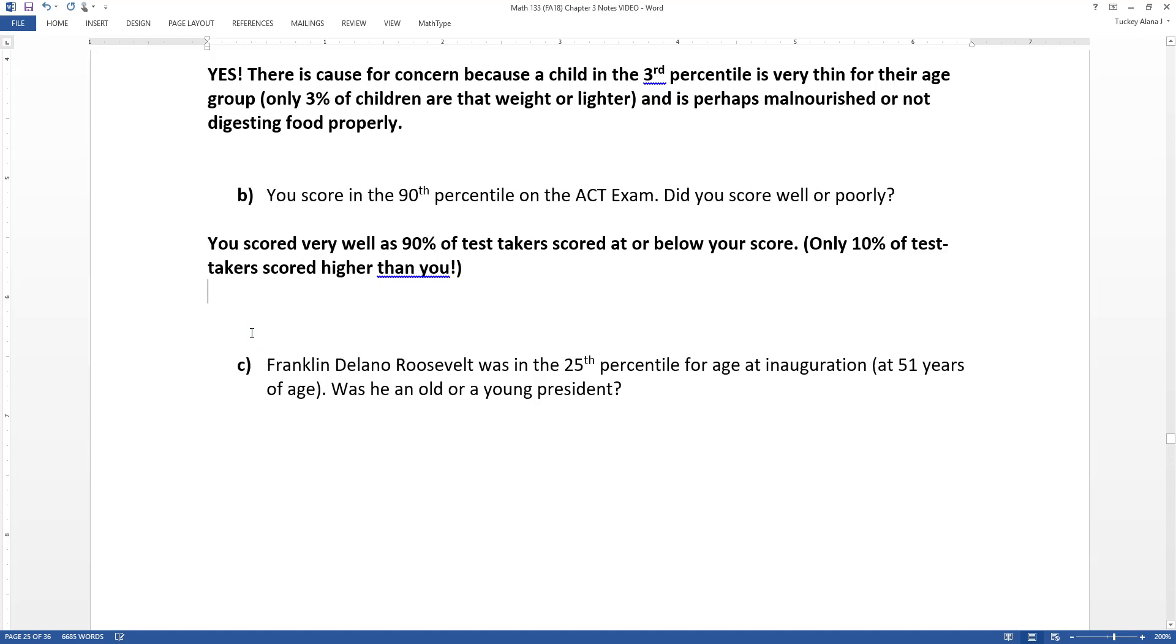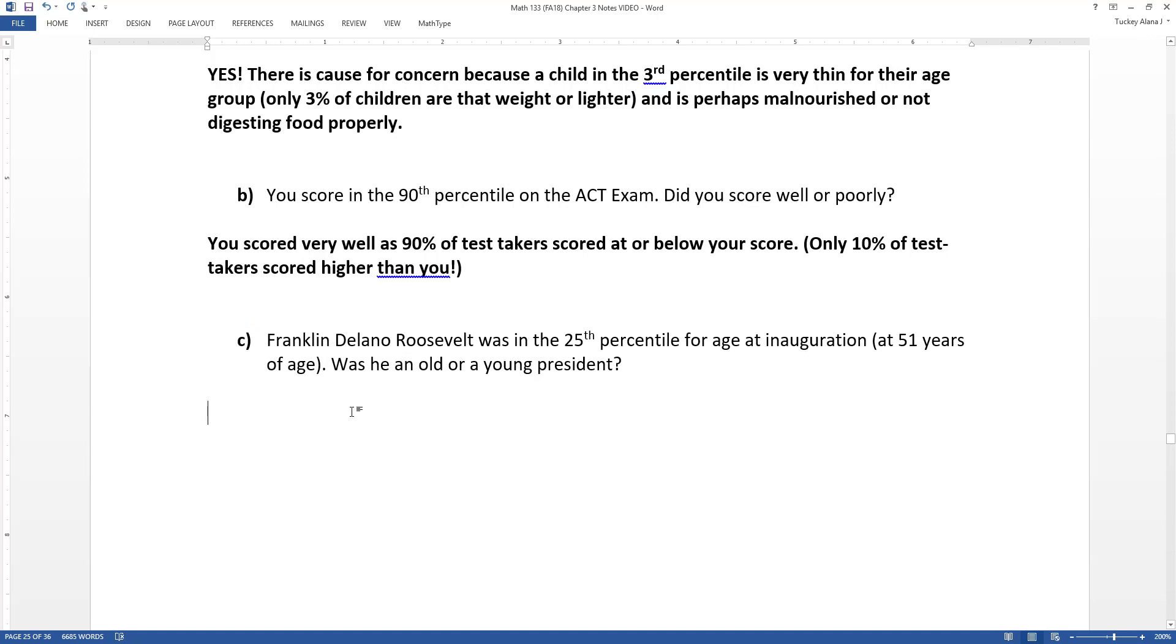Alright. Now, Franklin Delano Roosevelt was in the 25th percentile for age at inauguration. So when he was first inaugurated, he was 51 years old. Was he a young or an old president? And remember, this is in relation to the group of all presidents. I mean, 51 years old, you can make your own judgment about whether you think that's old or not. I used to think it was old, and then I'm getting closer to that age, and now I don't think it's so old anymore. But as a president, when you compare him to the other presidents, where is his position, right?